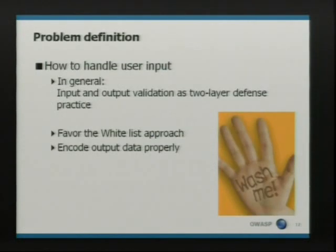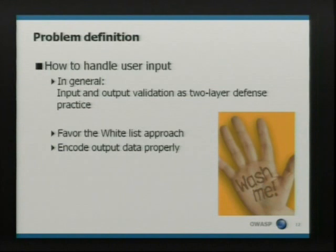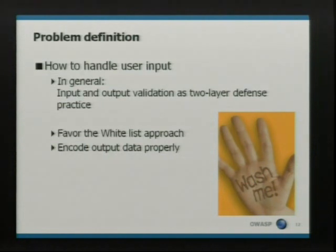The problem is straightforward if you're thinking about security and what you should do in the best case. First of all, a very strict input and output validation. Input validation means, as a priority, a whitelist which is very strict. And if you're doing output validation, it means you encode your data properly. But again, if you do it like that — no visitors, no money, no business.